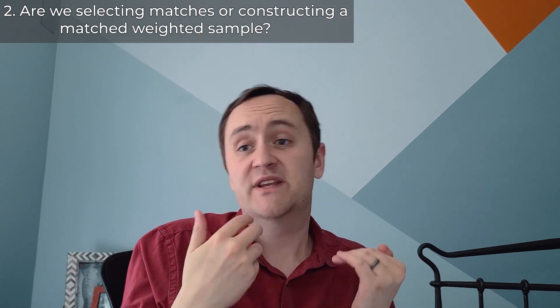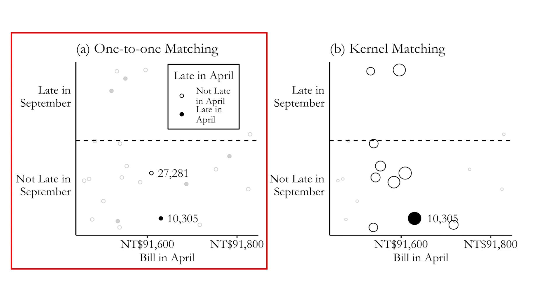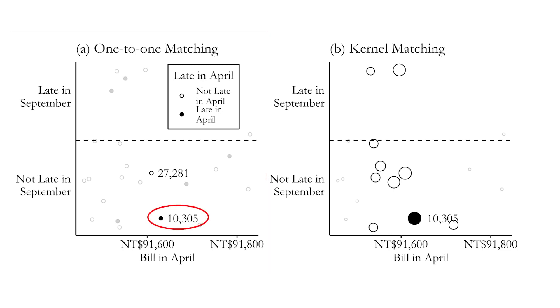That answers question one. Question two — which we touched on in the last video — is: are we selecting a set of matches, or constructing a weighted matched sample? We could pick the best match or a certain number of best matches, giving us a set of control observations. This graph shows one-to-one matching on the left: for treated observation row 10,305, the single closest control observation is row 27,281. Those two are basically the same except one was treated and the other was not.